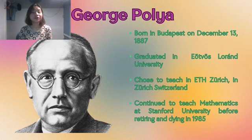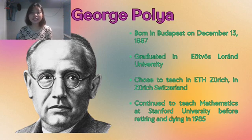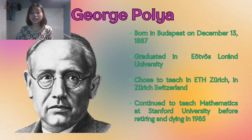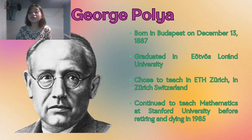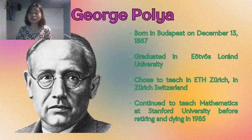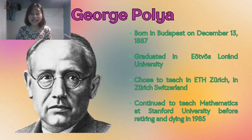Born in Budapest, in what was pre-war Austria-Hungary or now modern-day Hungary, on December 13, 1887, he graduated from Neuavos-Laurent University but chose to teach in ETH Zurich, Switzerland. Due to his Jewish roots, he together with his family moved to the United States at the height of the Third Reich. He continued to teach mathematics at Stanford University before retiring and dying in 1985.